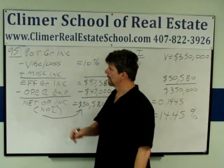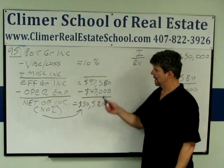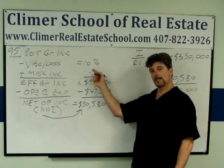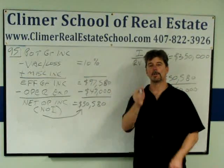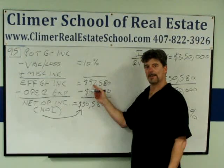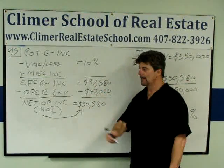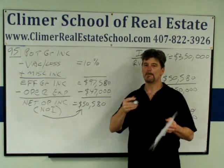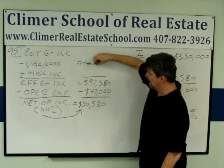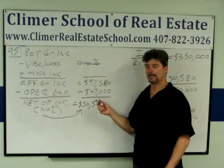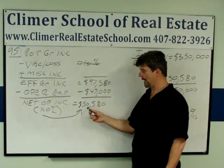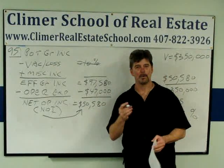But let's talk about the problem — we're going to fill in the blanks. The problem told us effective gross income of $97,580, and vacancies and losses of 10% — there's your trick. If the state gives you one like that, they're going to expect you to subtract 10% of the effective gross income from the effective gross income. But vacancies and losses have already been subtracted from potential gross income to get this figure. So this is garbage distracting information. Then you subtract expenses — operating expenses of $47,000 — and you get $50,580. That's your NOI.